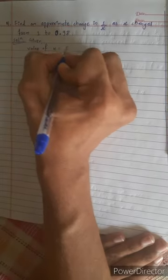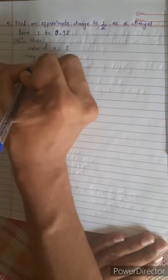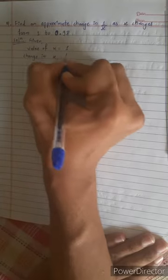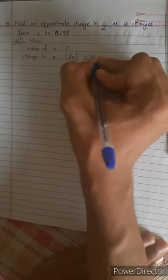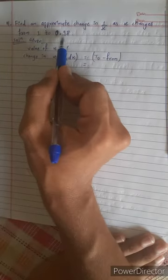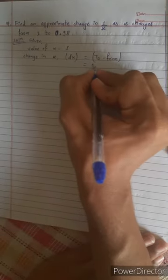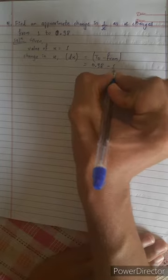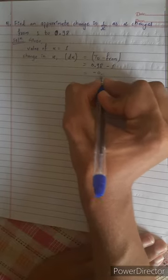We have x equals 1. Change in x, which is dx, equals x₂ minus x₁, which is 0.98 minus 1, equals negative 0.02.